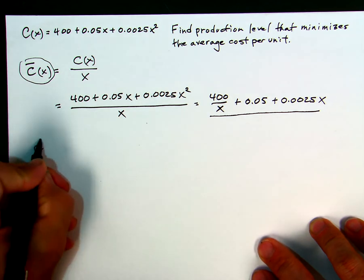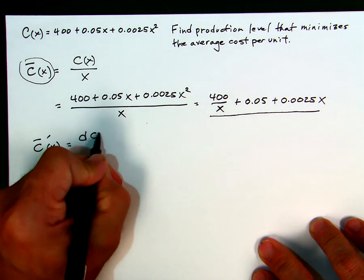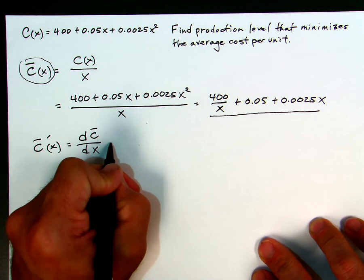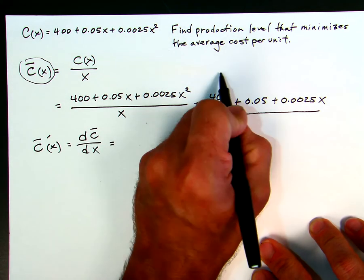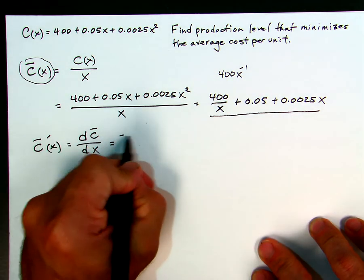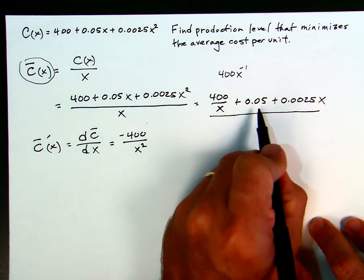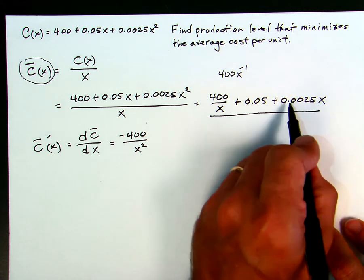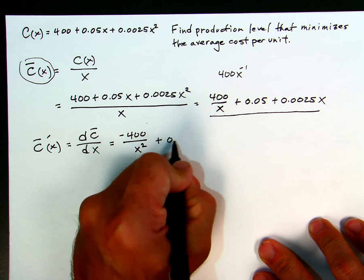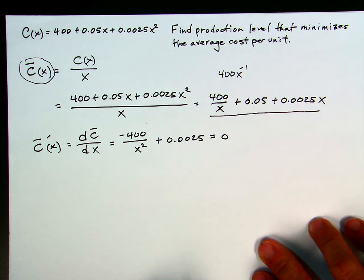So let's take the derivative of this. This is c-bar prime — you might also see the notation dc-bar/dx; they're the same thing. We take the derivative: 400/x is the same as 400x⁻¹, so its derivative is negative 400x⁻² or negative 400/x². The derivative of the constant 0.05 is zero, and the derivative of 0.0025x gives us back just the coefficient, 0.0025. To find the critical points, we set this equal to zero.